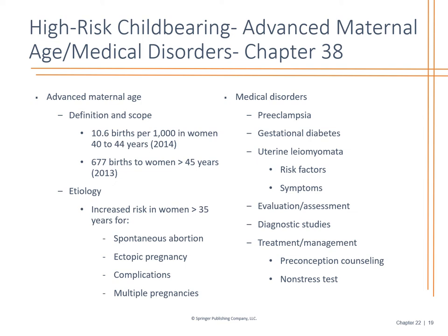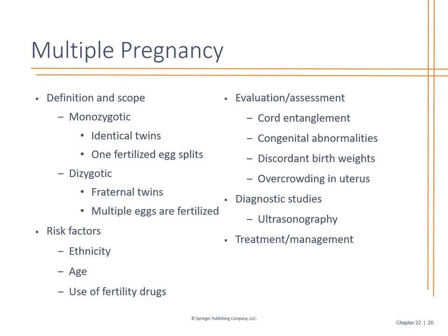Multiple pregnancies — monozygotic means one fertilized egg splits, giving identical twins, while dizygotic means multiple eggs are fertilized, giving fraternal twins. Often it's genetic and runs in the family. However, there are concerns with congenital abnormalities — is one baby getting more of the placenta? Is there cord entanglement due to limited uterine space? Birth weights can differ significantly between twins. These things are very important and will be monitored by OB/GYN.